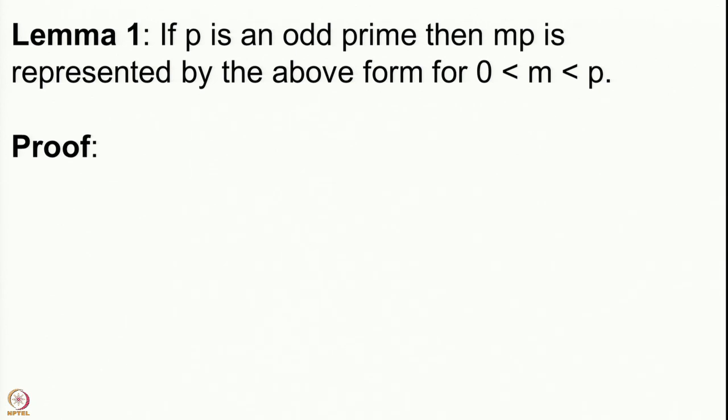Let us see this basic lemma. Suppose p is an odd prime; then mp is represented by the above form for some 0 < m < p. What we want to prove is that p is represented by this form, so we would eventually prove that m = 1. We first obtain this slightly weaker result that a multiple of p — where that multiple is by a number less than p — is represented by the sum of 4 squares. Let us see the proof of this statement.